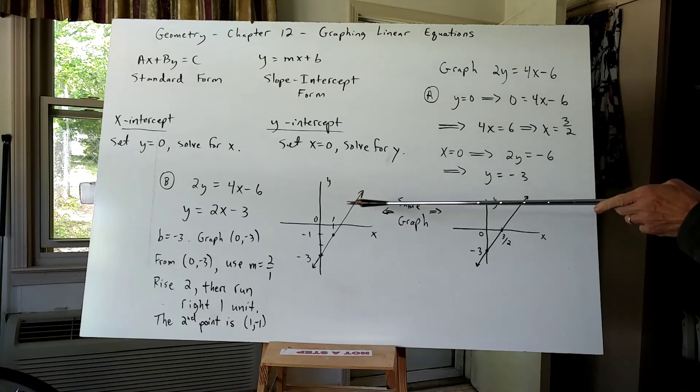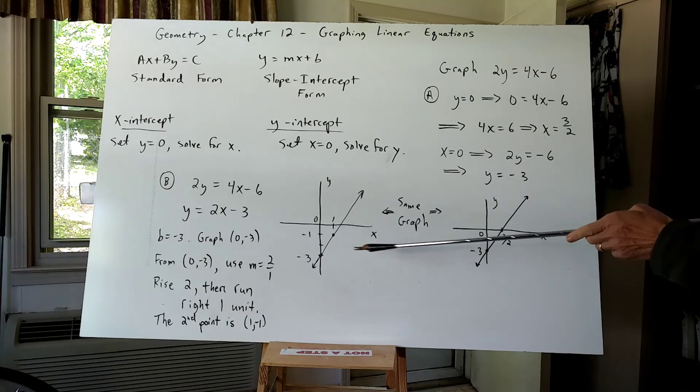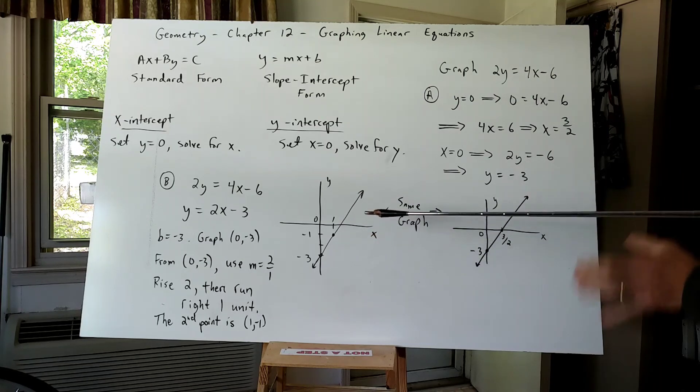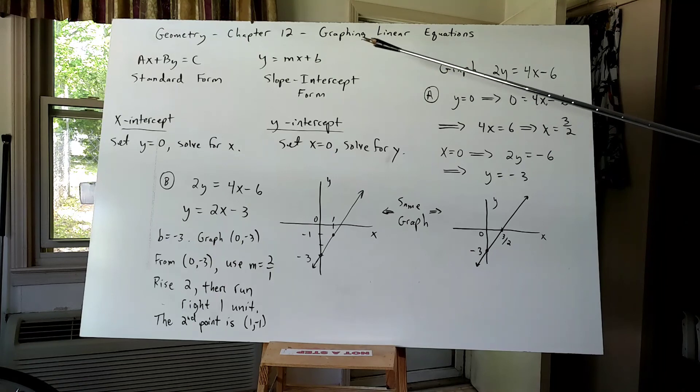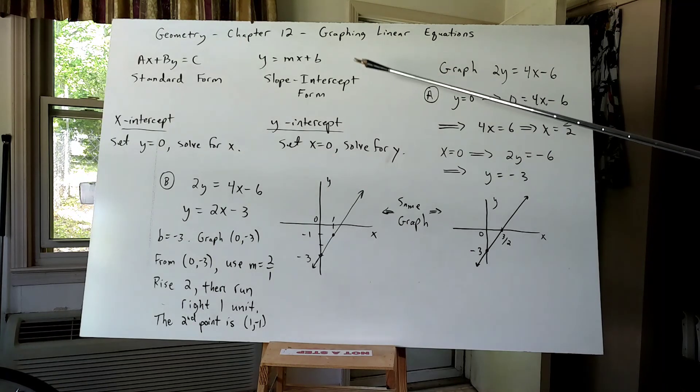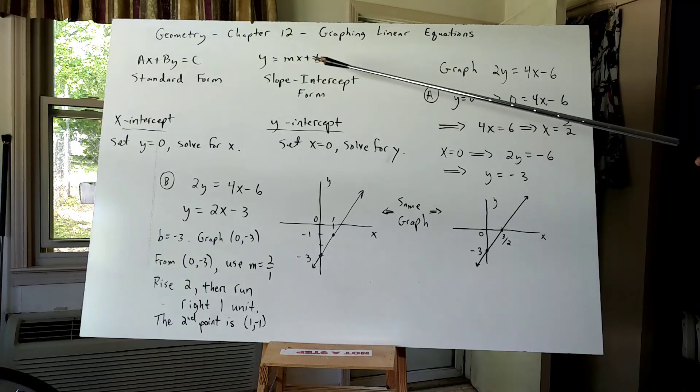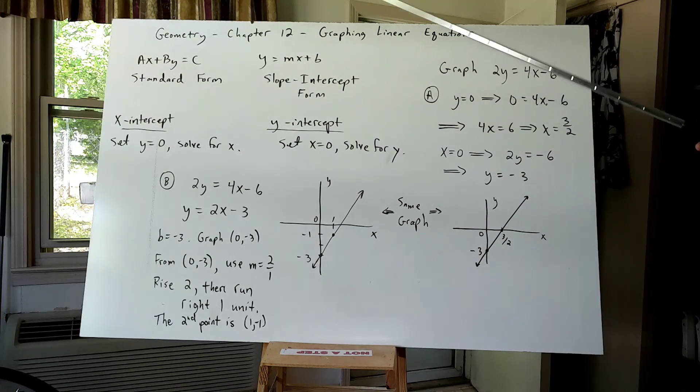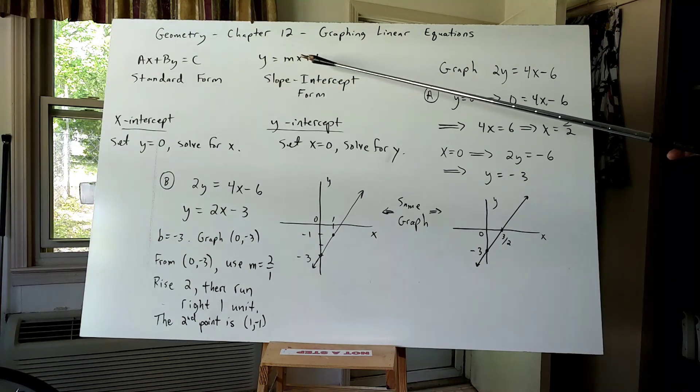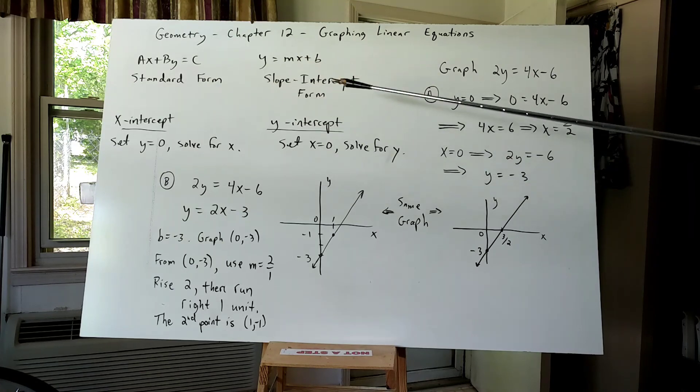If slope is negative, I go down and then right. That's how I graph in slope intercept form. I always go right after rising either up or down. If slope is positive, I rise up. If slope is negative, I rise down. I go down.